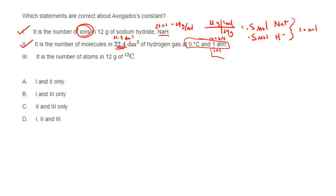They updated it. It's now, instead of 101 kilopascals or an atmosphere, it's 100 kilopascal. 22.7 is better. This is an old question. You won't see this. Don't worry about that number. Is it the number of atoms in 12 grams of carbon-12? Yes, it is. So our answer here is D.